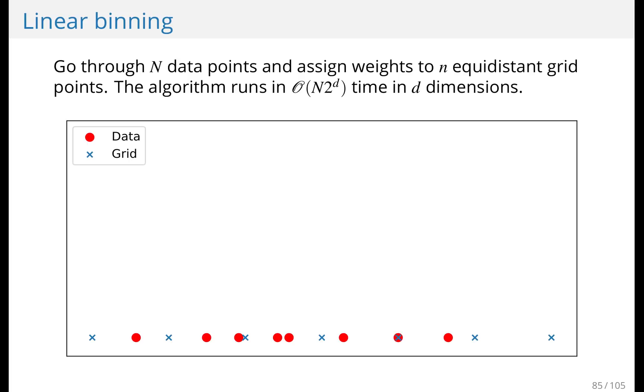Imagine that you have data and you have a grid. Your grid is equidistant, meaning the distance between every two grid points is the same. So it's for instance, one, two, three, four and so forth. And then you have some data and the data is not equidistant necessarily.